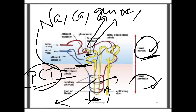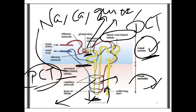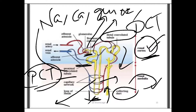The distal convoluted tubule, or DCT, is the convoluted part that lies in the renal cortex and opens into the collecting tubule. Most of the water from the nephric filtrate is reabsorbed here by osmotic absorption, and then passes to the collecting tubule.